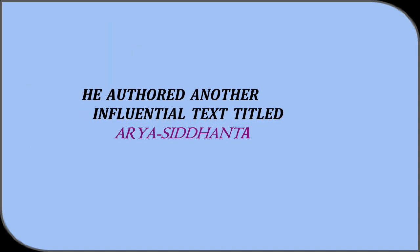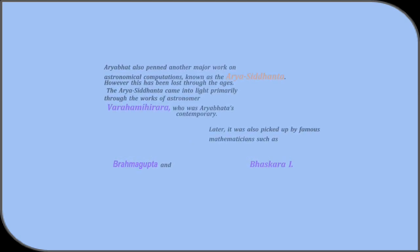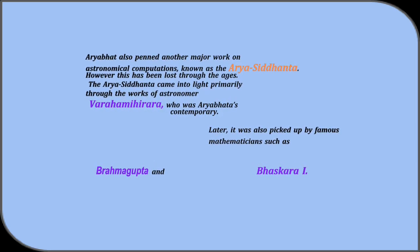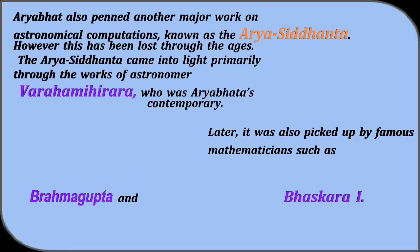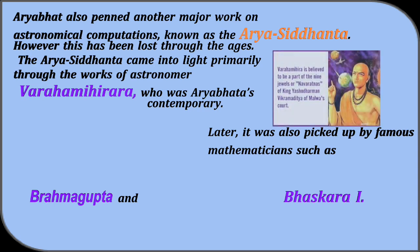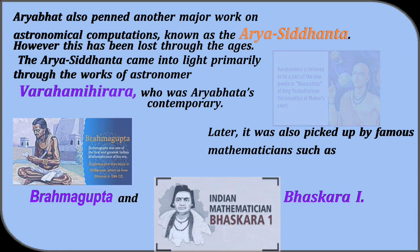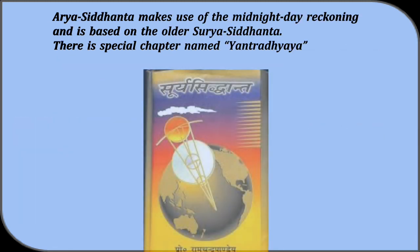He authored another influential text titled Arya Siddhanta. Aryabhata also penned another major work on astronomical computations known as the Arya Siddhanta. However, this has been lost through the ages. The Arya Siddhanta came into light primarily through the works of Varahamihira, who was his contemporary. Later, it was also picked by famous mathematicians such as Brahmagupta and Bhaskara I. Arya Siddhanta makes use of the midnight day reckoning and is based on the older Surya Siddhanta.